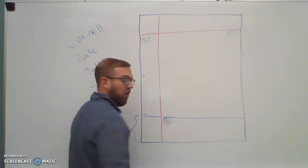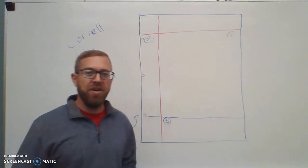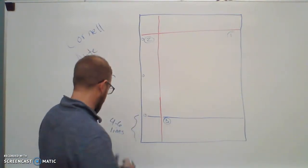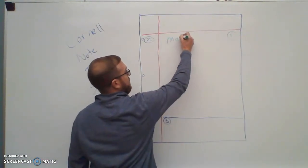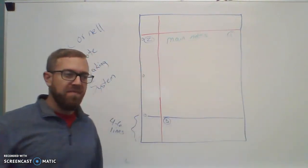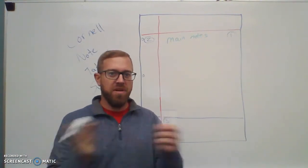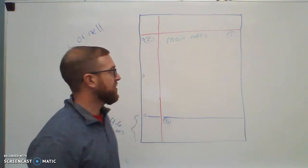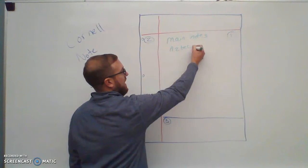But for our purpose today, we're going to call this section one, this will be section two, and down here we're going to call this section three. Now, the way Cornell notes work is that in the first section, the main section, this is where you write your main notes.